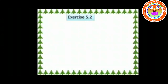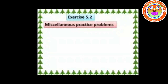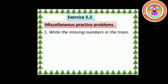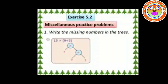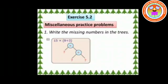Exercise 5.2 — Miscellaneous practice problems. First one: write the missing numbers in the trees. From the first tree, we can clearly see the leaf is 15, and the symbol ÷ is the branch whose leaves are 9 and 3.